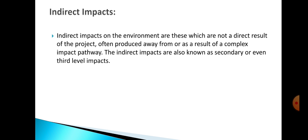Indirect impacts are those which are not a direct result of the project. Such impacts are produced away from the source as a result of a complex impact pathway. Like primary and secondary pollutants — where secondary pollutants are derived from primary pollutants — indirect impact means it does not result from a direct action but occurs somewhere away or as a result of a complex impact pathway. These are also called secondary or even third-level impacts.